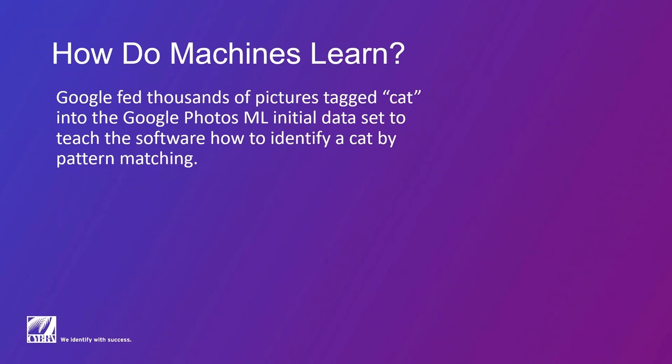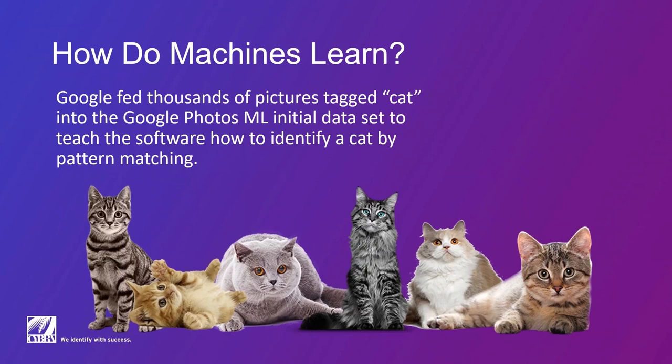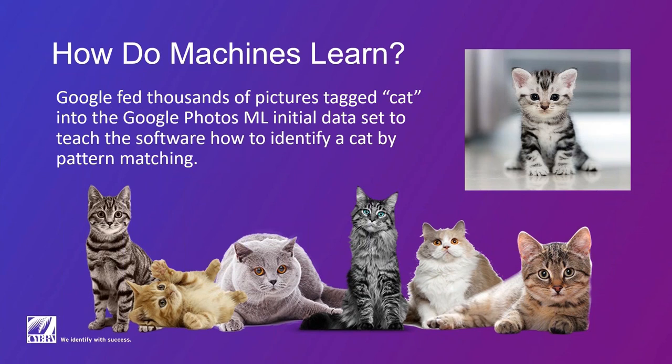So Google fed thousands of pictures tagged cat into the Google Photos app, machine learning initial data set, to teach the software how to identify a cat by pattern matching. So they fed a very large number of pictures of cats so that when you take a picture of a cat with your phone and that goes up into the Google Photos app, they automatically can characterize the picture as a cat, that's a baby cat or whatever. And this is in a basic nutshell. So they train the software, they set a very large data set and then they pattern match to see, okay, these are cats, that must be a cat.